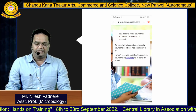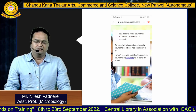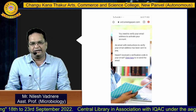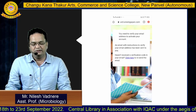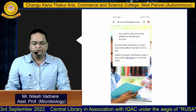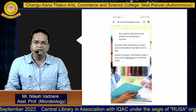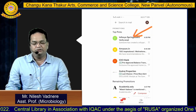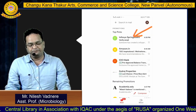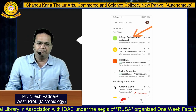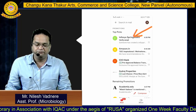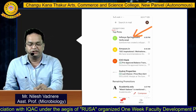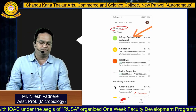Once you create the password, it will prompt you to verify your email ID. Open your email — you will find the mail from Infosys Springboard under the Promotions section of Gmail.